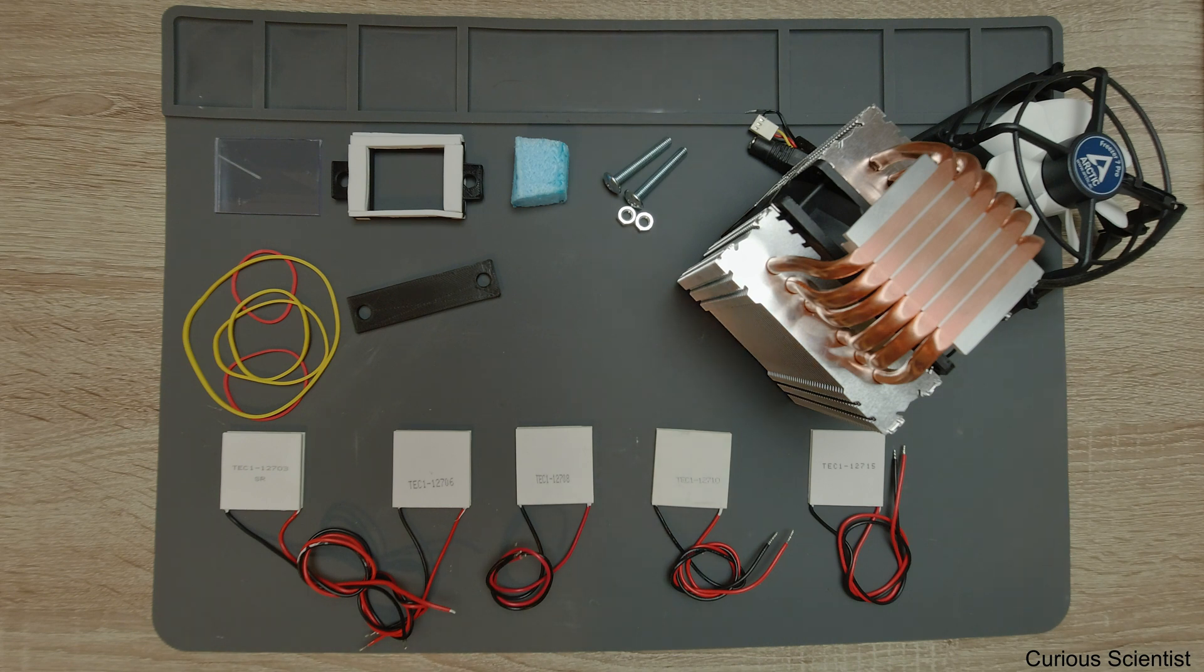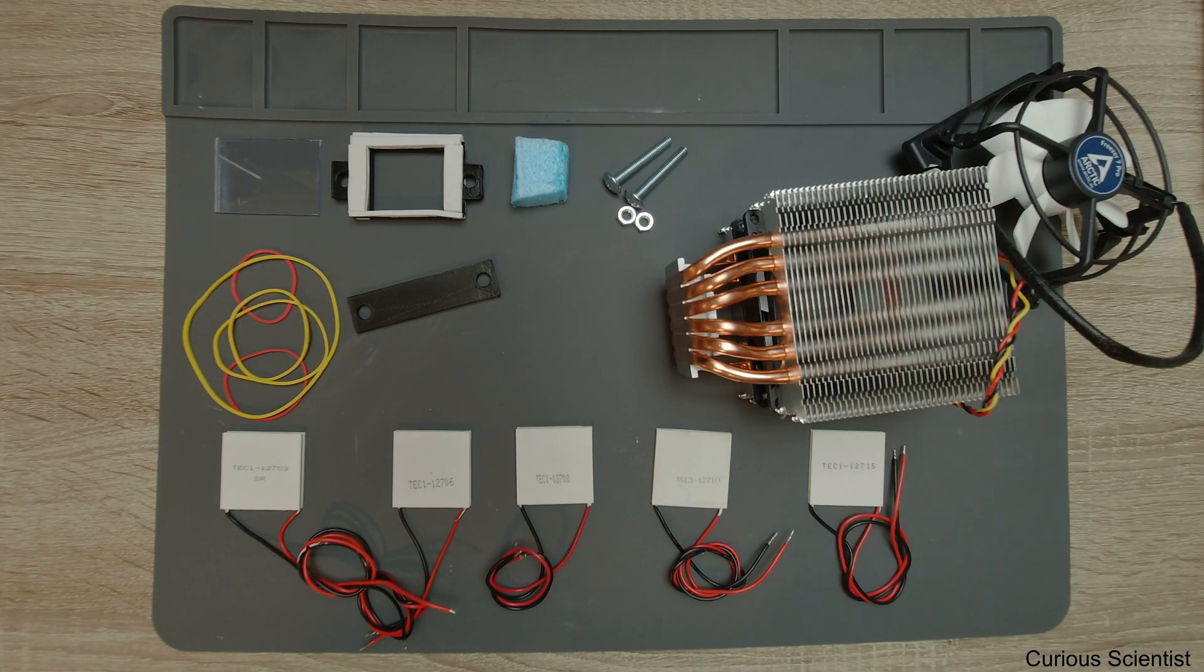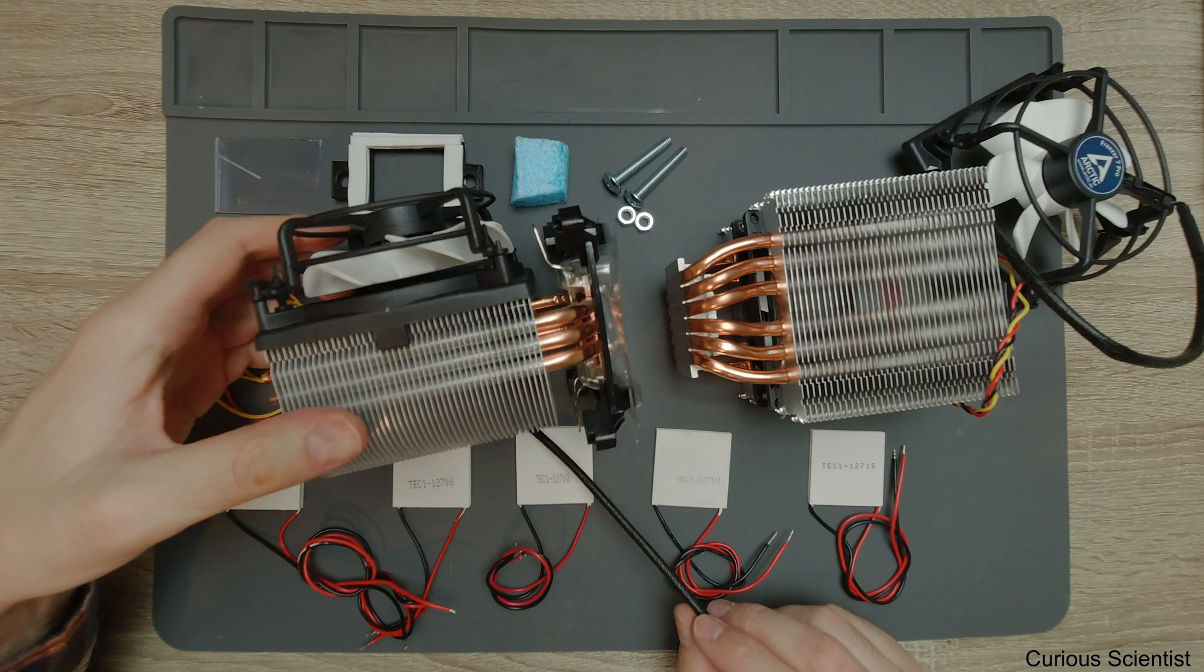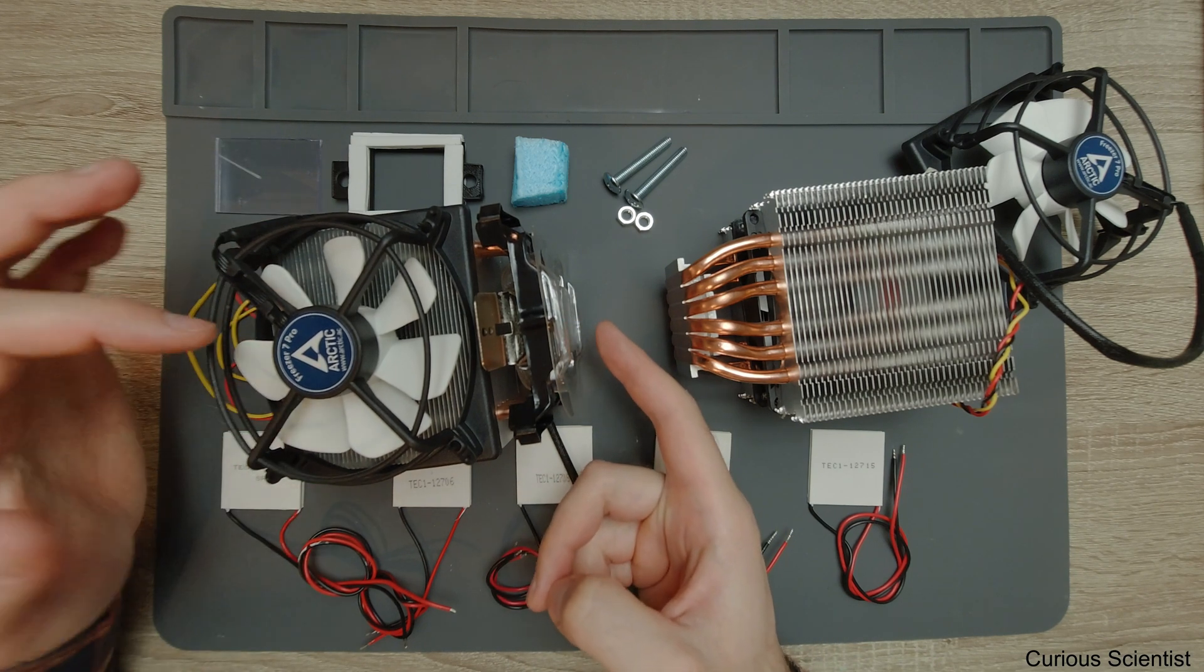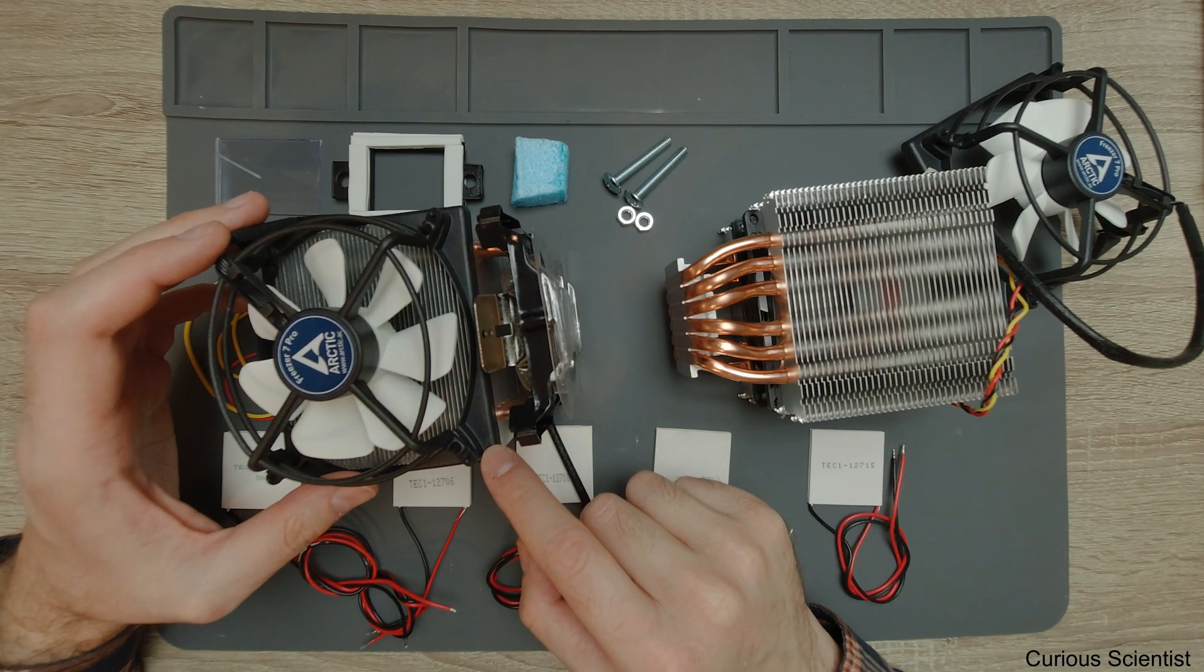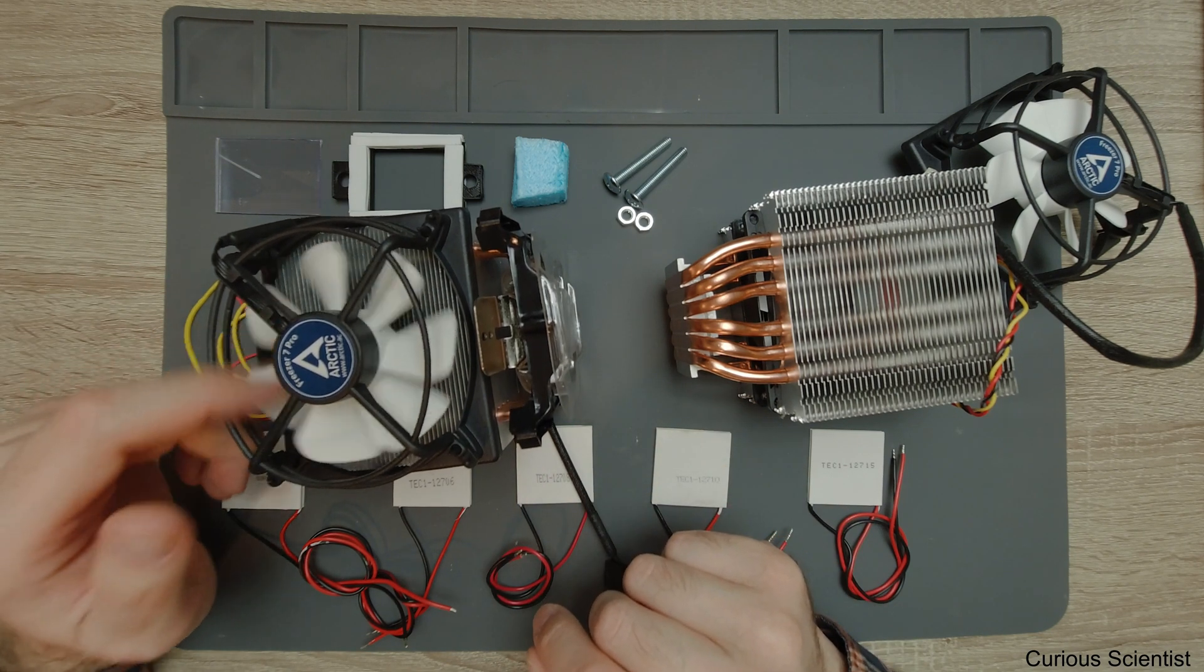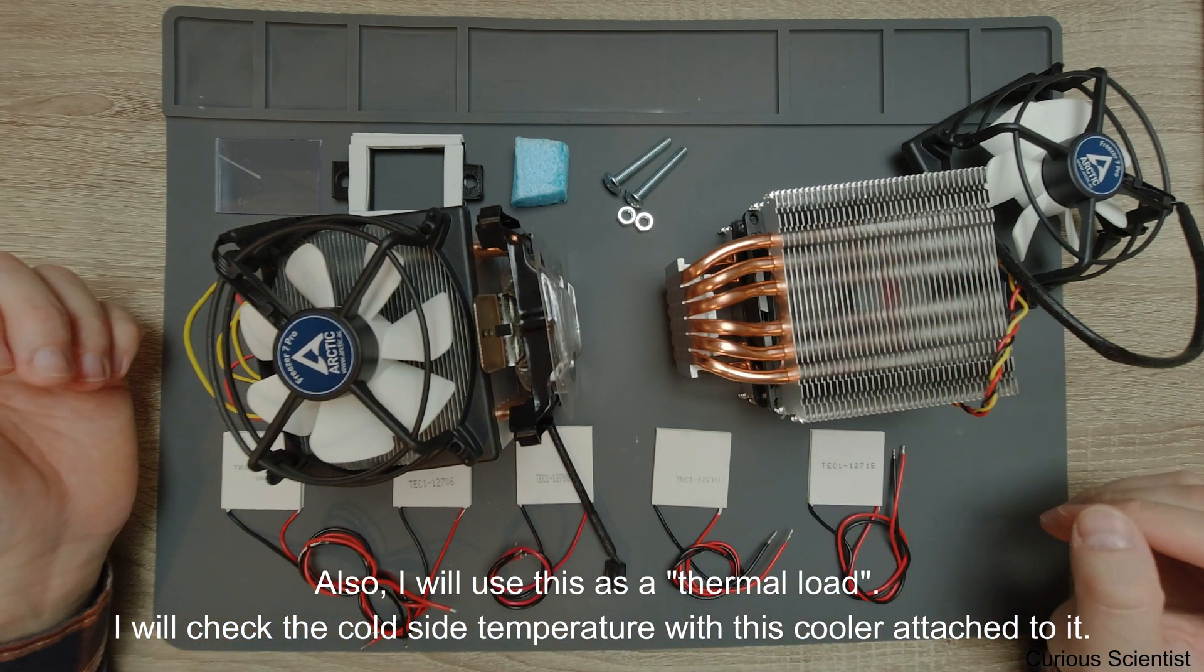I have another idea because a lot of people are trying to make this into an AC. We have this CPU cooler which will cool the hot side, but then I will use a similar cooler attached to the cold side. I will see the outlet temperature, how much I can cool down the heatsink and cool the environment.